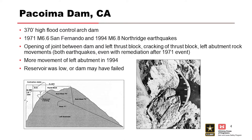During the 1994 Northridge event, the measured PGA at the base was approximately half a G, and the pool elevation was 131 feet below the crest. There was a permanent offset noted at the crest, and the thrust block and underlying rock mass appeared to have moved away from the thrust block. The dam did not fail during either event, but very well could have if the upstream pool was at a higher elevation at the time of the earthquakes.